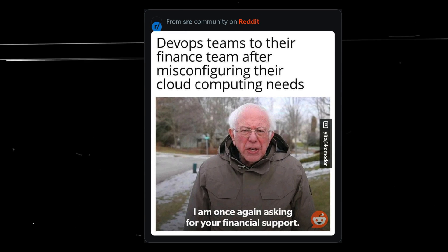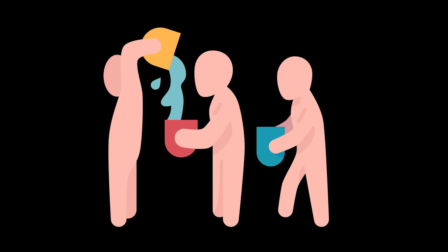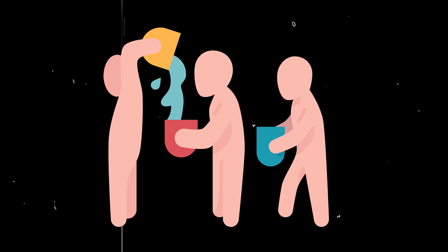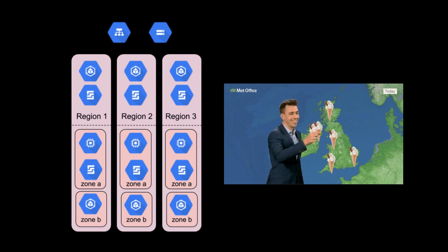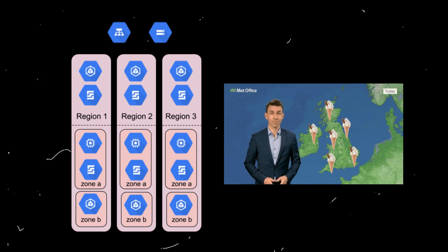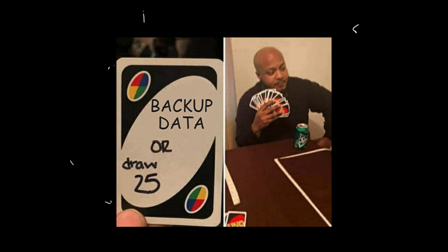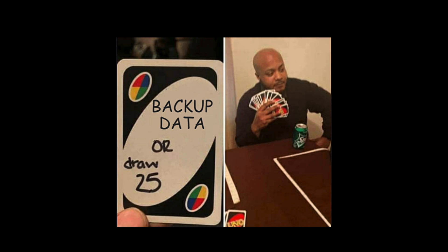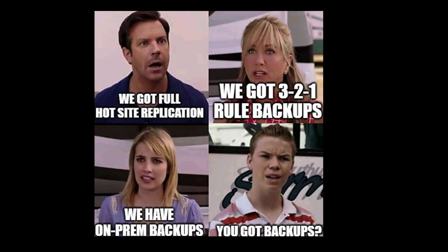One might question the effectiveness of their backup plans. UniSuper had relied on Google's geographic redundancy — a system that involves storing copies of data in multiple locations to reduce the risk of data loss. But in this instance, this safety net proved to be insufficient. Fortunately, UniSuper had an additional backup with another company, which ultimately saved the day.